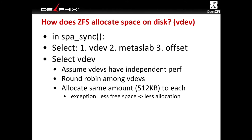To accomplish that, we round-robin among all the devices, allocating the same amount from each — set to 512K. So with a gigabyte to allocate, we take the first 512K from one device, next 512K from another, then go back to the first. The end result is that if we have three devices and a gigabyte to allocate, we allocate a third of a gigabyte to each. There's a small exception for devices with more or less free space, where we'll allocate a little more or less.